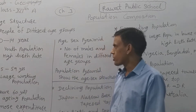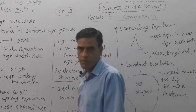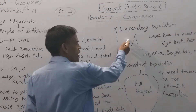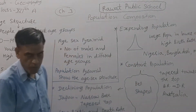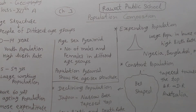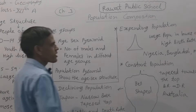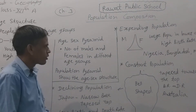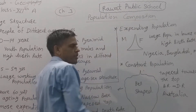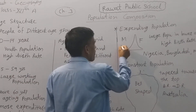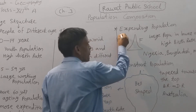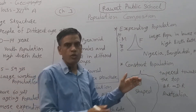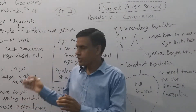Now, the age-sex pyramid — if we show the population like a pyramid, in this pyramid one side has the male population and the other side has the female population. On the left side is male population and on the right side is female population. In this age-sex pyramid, we start from zero years and the age groups are written here.